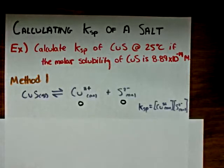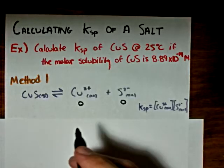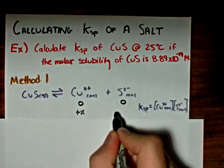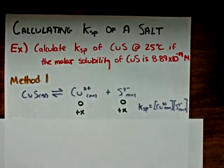We'll have a change in concentration equal to plus X. And I didn't write it down, but we know that X is equal to the change in concentration of the copper 2+ ion, which is equal to the change in concentration of the sulfide ion.